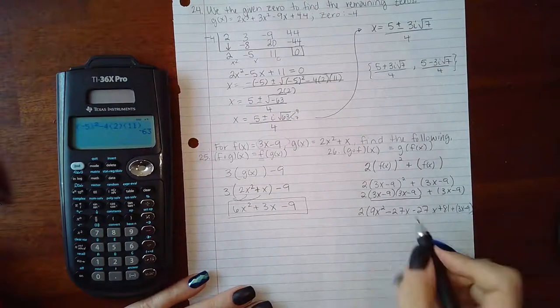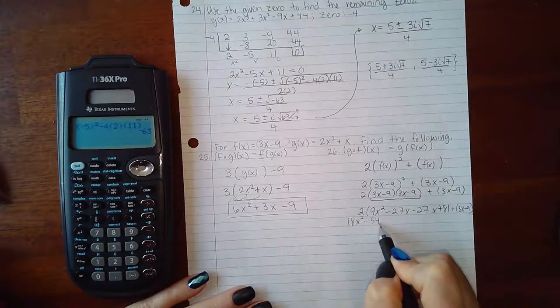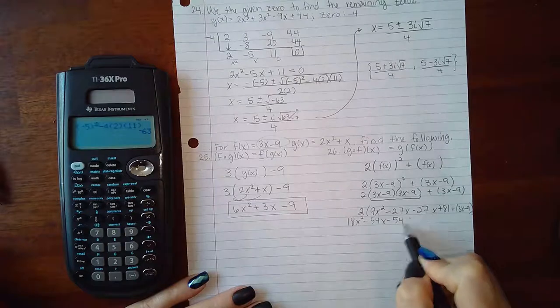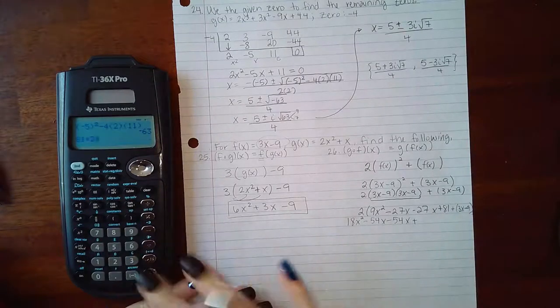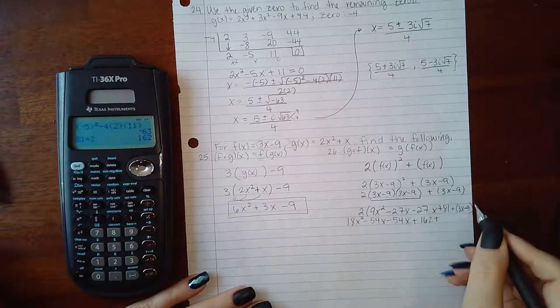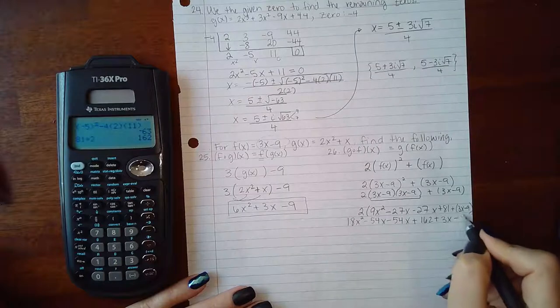Then if I distribute my 2 I will get 18x squared minus 54x minus 54x plus 81 times 2 is 162. And here there's no exponent or coefficient to distribute, so we'll just have 3x minus 9.